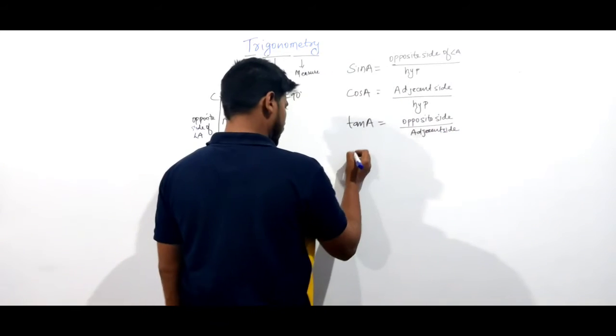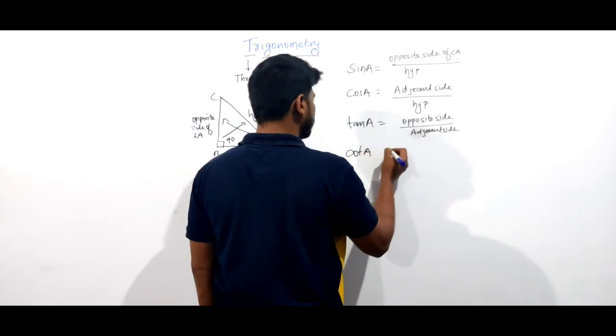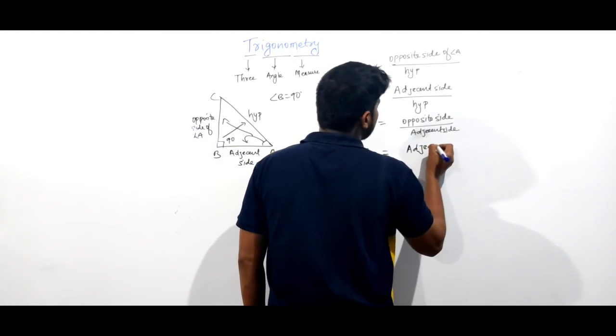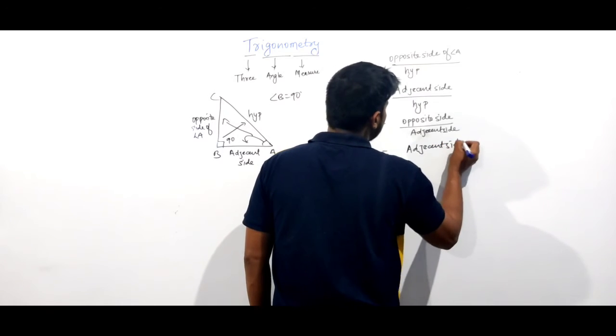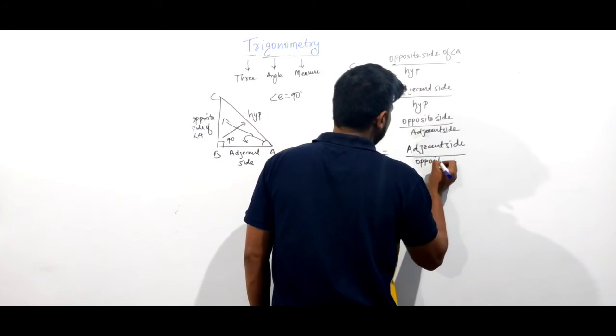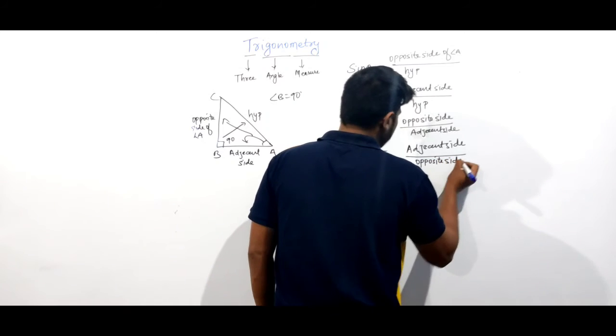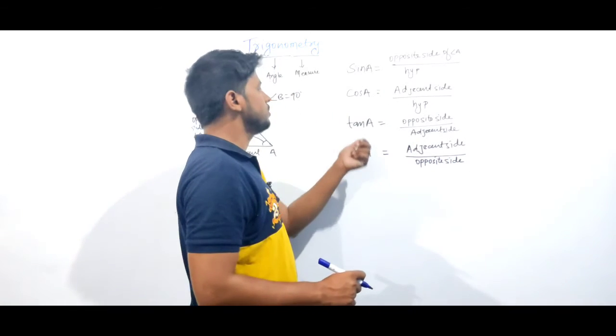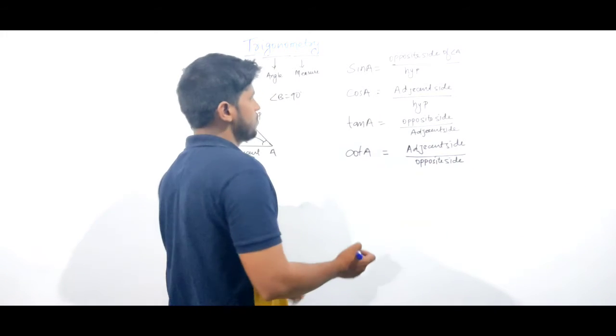And tan A is equal to opposite side by adjacent side. Cot A is just the reciprocal of tan A.